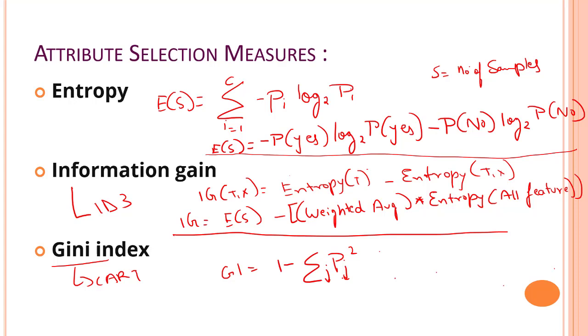Gini index works with the categorical target variable success or failure. Maybe it performs only binary split. Make this as a point. Only binary splits.